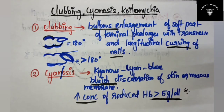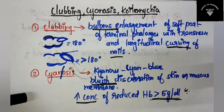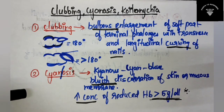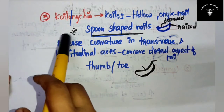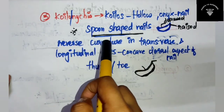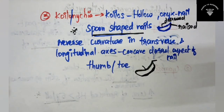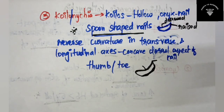So these are the three important terms. First is clubbing — the bulbous enlargement. Second is cyanosis — the bluish discoloration. Third is koilonychia — the spoon-shaped nails. That's it for today's video. If you like the video, hit the like button, share the video, and please don't forget to subscribe. If you have any queries, leave them in the comment section below. Thank you for watching.